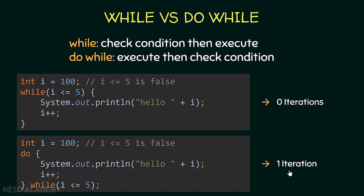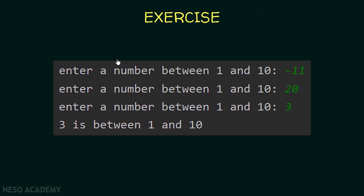As we saw in the previous exercise, we wanted to read the first input from the user at least once before executing the loop. Because the do-while loop executes at least once, we can read the first input inside the do-while loop. After reading the first input, we start checking the condition. Now, try to resolve the exercise using a do-while loop. The user is asked to enter a number between 1 and 10, and invalid entries (like -11 or 20) prompt the same message again, until a valid number like 3 is entered, displaying '3 is between 1 and 10.'